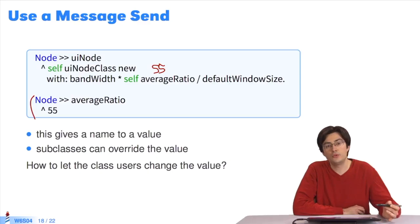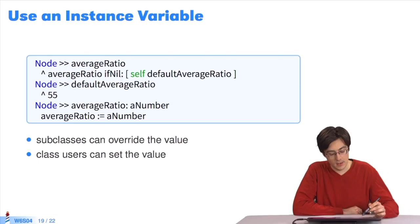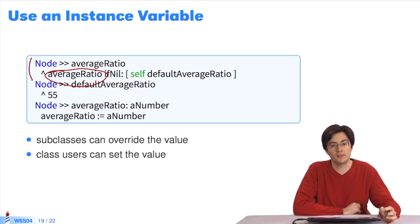Creating an average ratio method to return 55 enables all subclasses to change values. But how can we let class users change their value too? What we can do is use an instance variable. The average ratio method used in the previous slide will return the value of the instance variable if it contains a value.